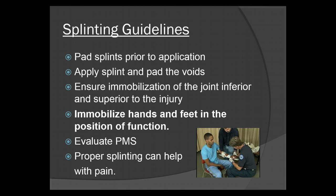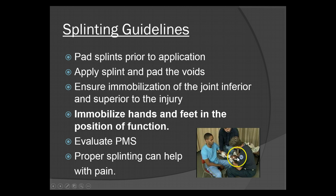When splinting hands and feet, always immobilize them in the position of function. As you see in the picture, the hand is slightly elevated with the fingers nice and relaxed over what looks like a gauze ball — this is the position of function for your hand. Your foot will actually be slightly extended. Evaluate your pulse, motor, and sensory. Proper splinting can actually help with the pain — once you get a splint in position, your patient will more than likely have pretty significant pain relief.